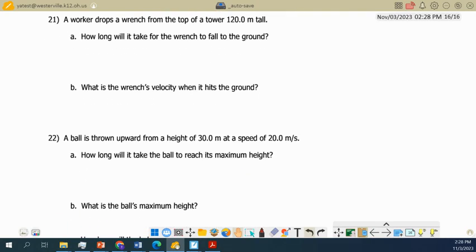Let's talk about question 21. A worker drops a wrench from the top of a tower 120 meters tall. Let's first write down the pieces of information that we know in this problem. We know it drops from the top of a tower, so x0 is 120.0 meters.